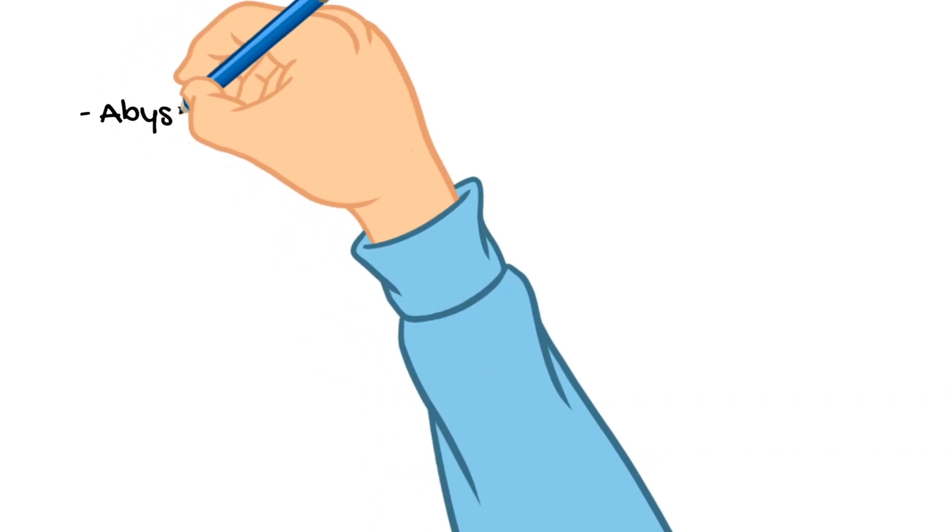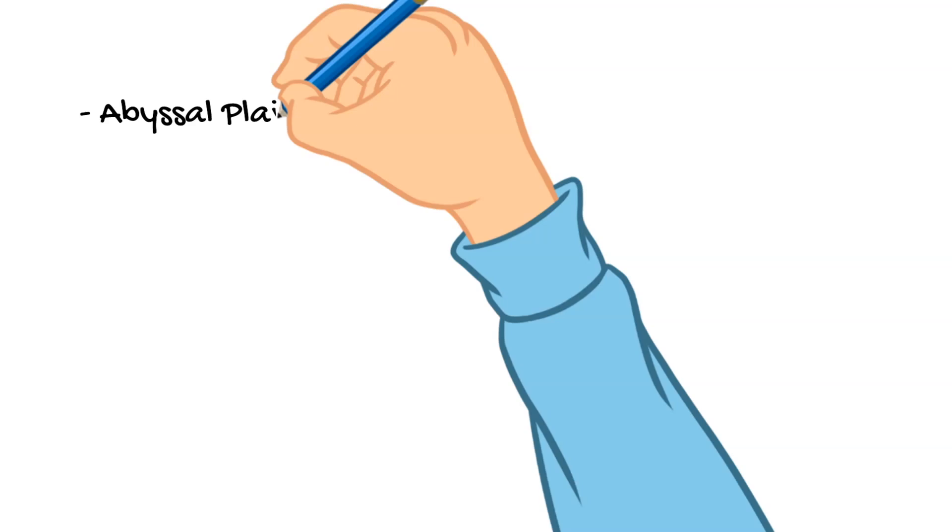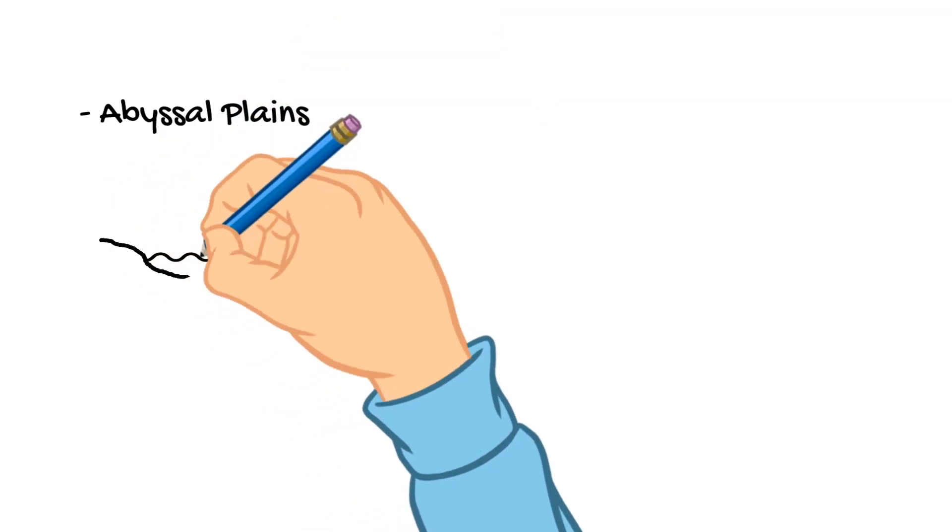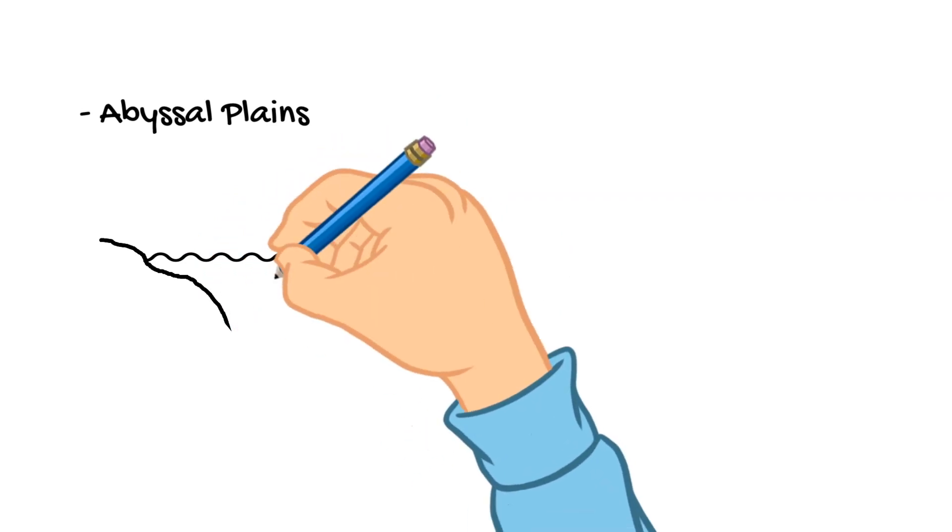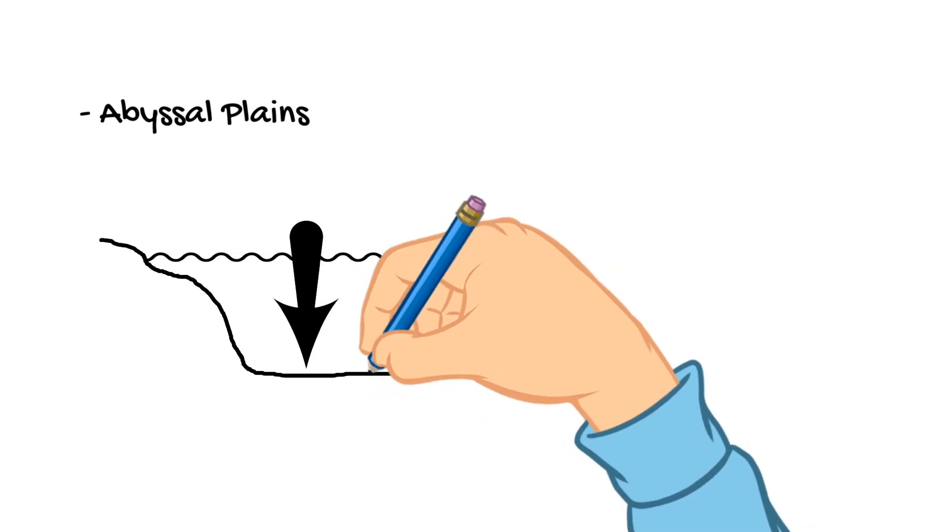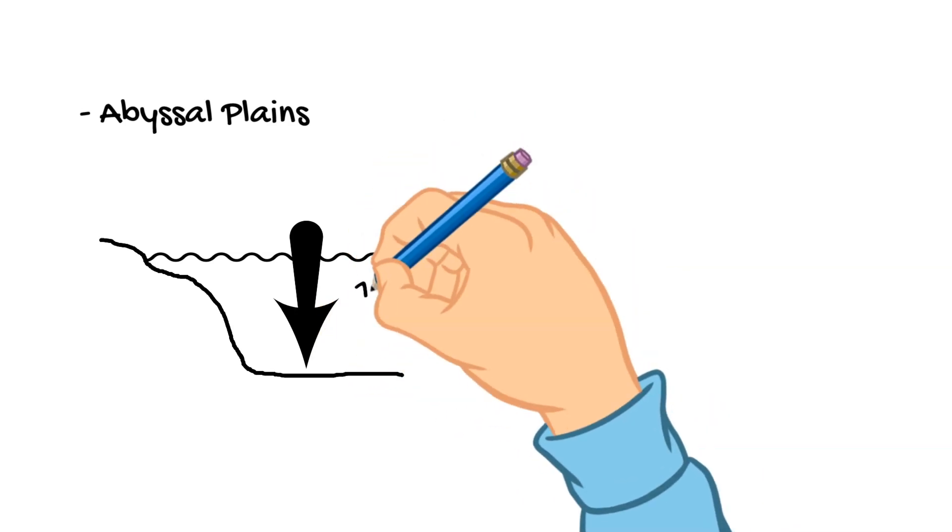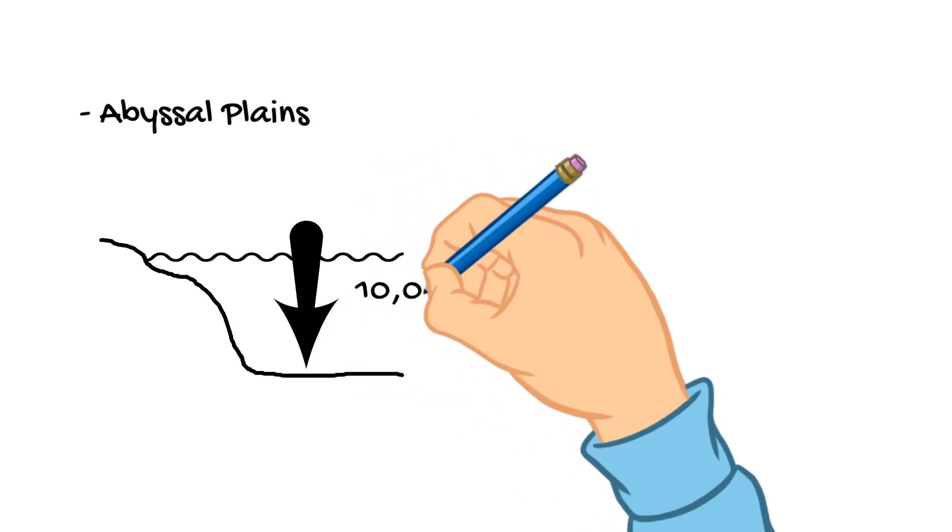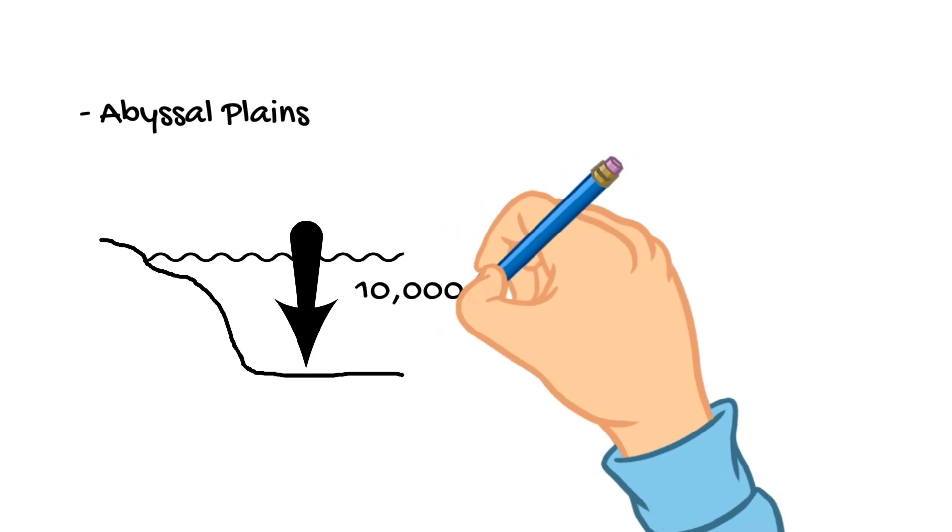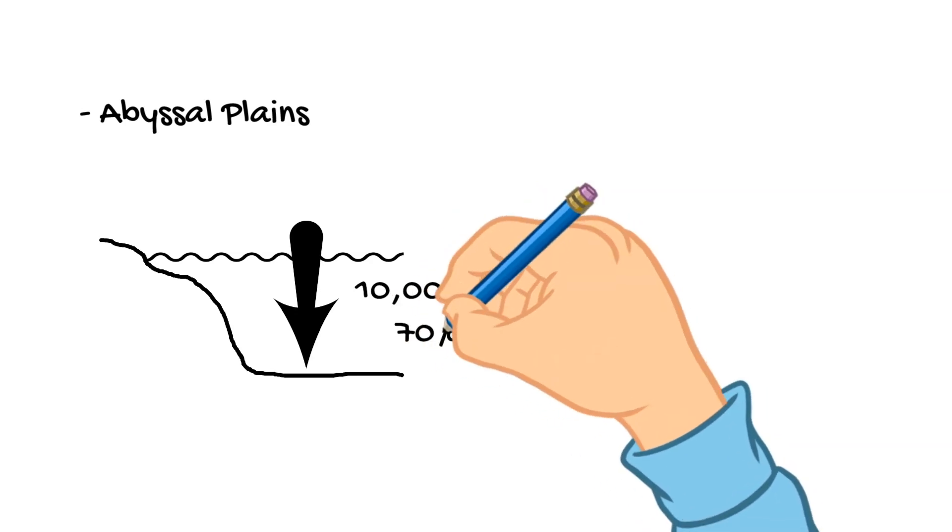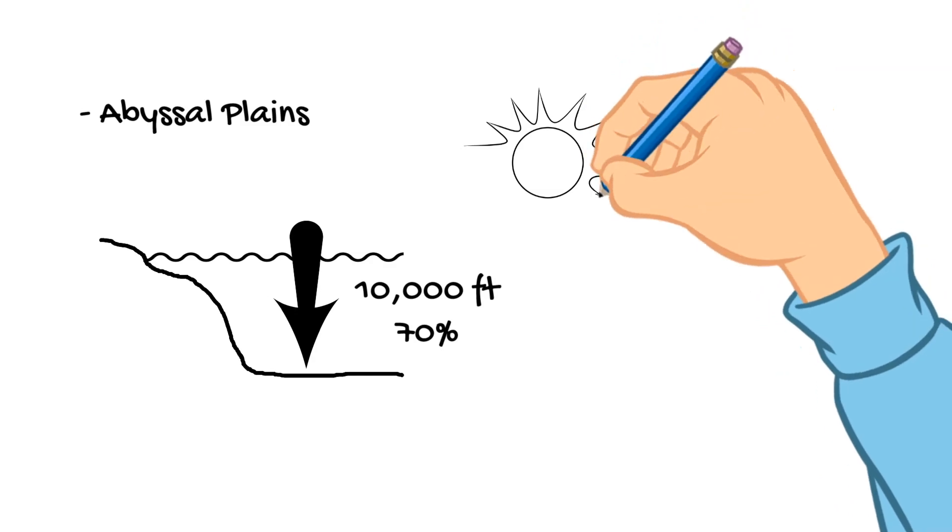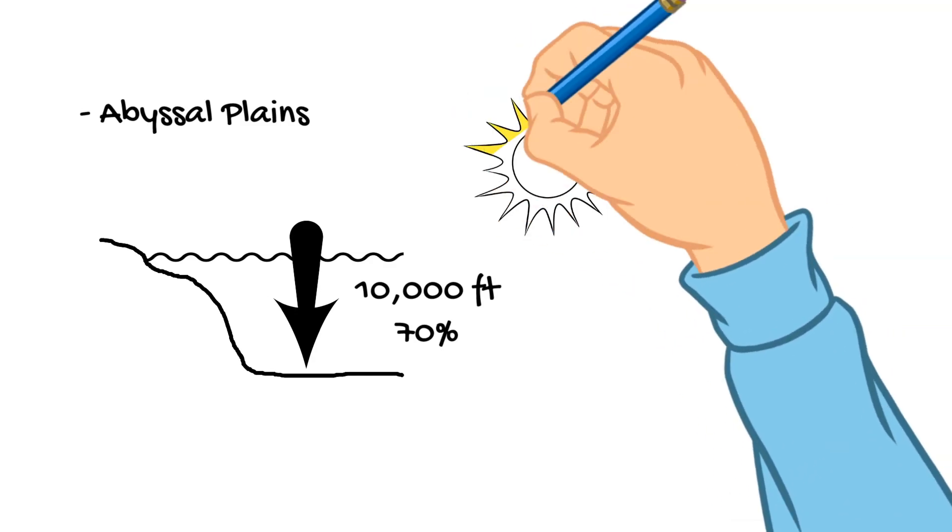Next up, let's talk about abyssal plains. So if we are taking a trip across the ocean, the next type of ocean floor that we will come across is the abyssal plains. From the continental shelf, the ocean floor descends in a steep manner and reaches depths over 10,000 feet. Abyssal plains cover about 70% of the ocean floor and are considered to be the largest habitat on earth.